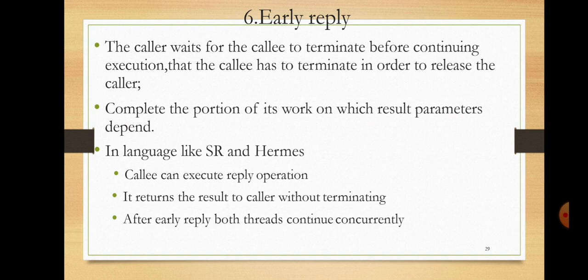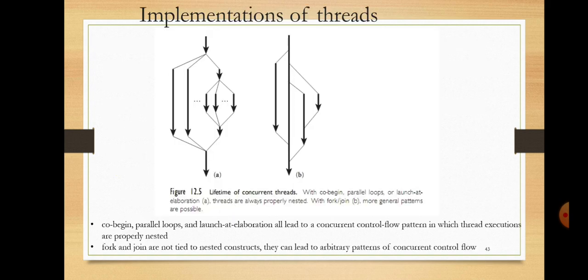In languages like SR and Herms, the callee can execute a reply operation that returns the result to the caller without terminating. The callee performs a reply operation and passes the intermediate result to the caller. Once the caller receives that result, it can continue its execution, and both the caller and the callee can then run in parallel using threads. This is the early reply operation.